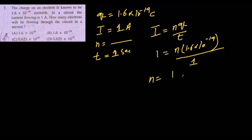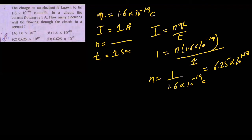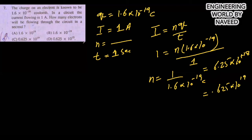So n = 1 / (1.6 × 10⁻¹⁹) = 6.25 × 10¹⁸. So option C is the correct answer.